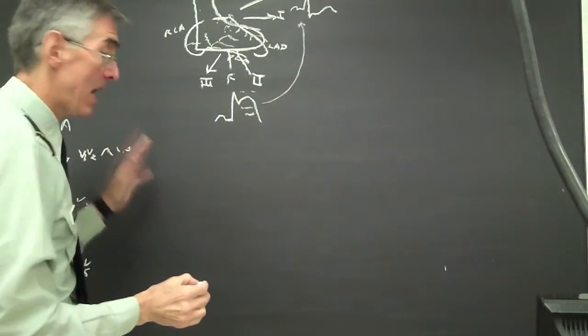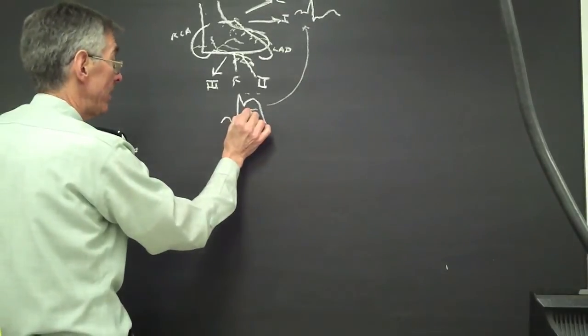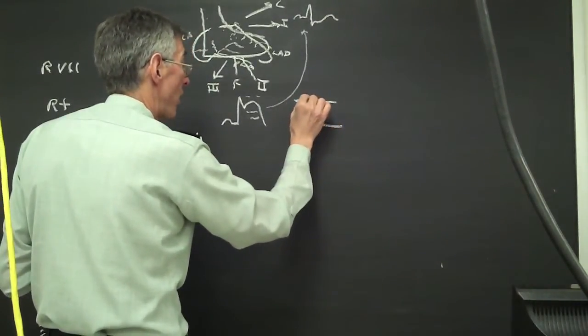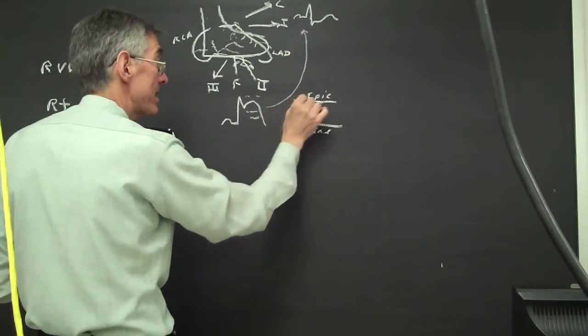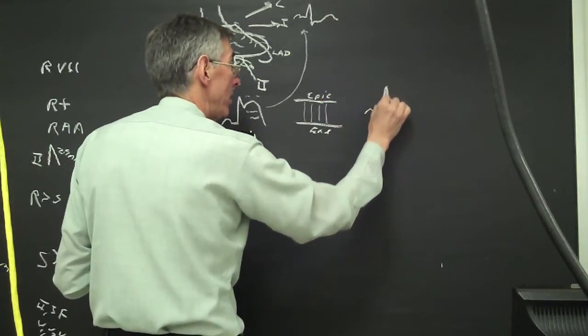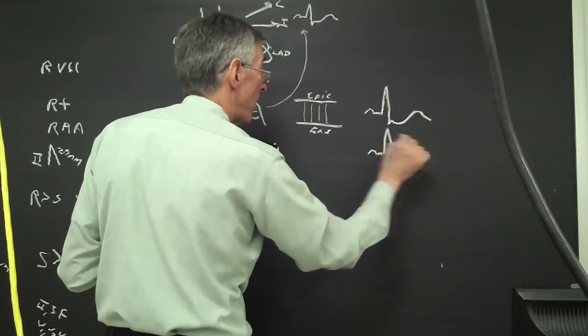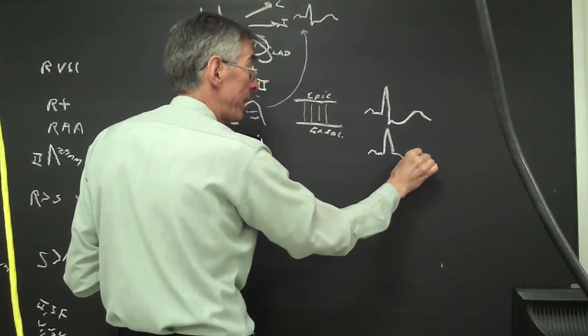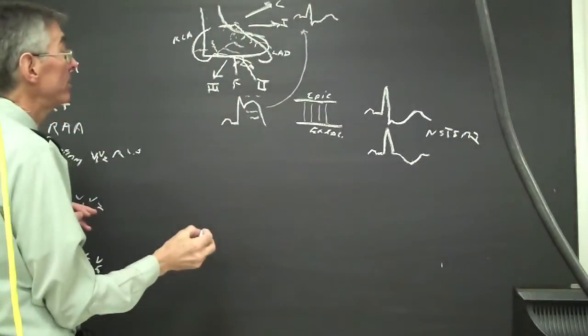The distinction between a non-ST elevation MI and an ST elevation MI is ST elevation here. With non-ST elevation, and this is a transmural infarction. If this is epicardium and this is endocardium, this would be an ST elevation would be transmural infarct. Whereas, ST segment depression or ST segment or T wave inversion oftentimes is a marker of endocardial ischemia or endocardial injury or a non-ST elevation MI if we have enzyme elevation.